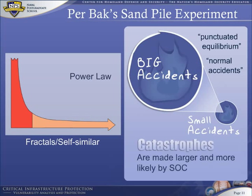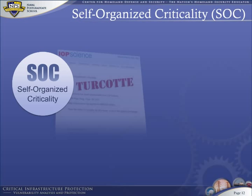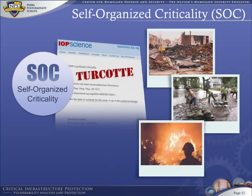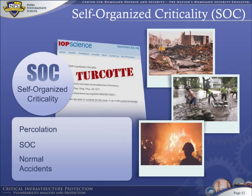Catastrophes are made larger and more likely by SOC. The concept of self-organized criticality is widespread — Turcotte used it to explain earthquakes, floods, and other hazards. It appears that percolation, self-organized criticality, and normal accidents are all different facets of the same thing. In summary, this theory explains many natural hazards and how they lead to disaster.